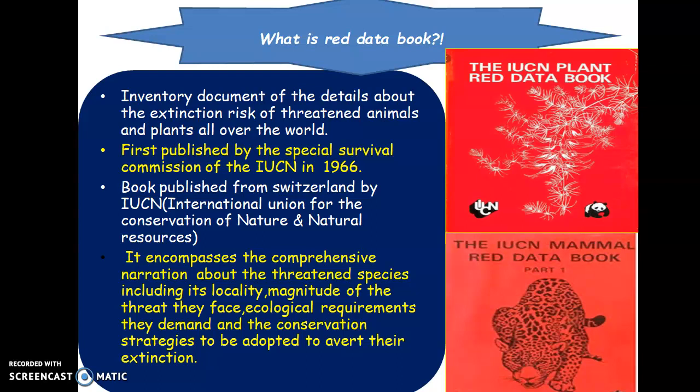What does this Red Data Book include? It encompasses a comprehensive description of threatened species, including their locality, the magnitude of the threat they face, the ecological requirements the concerned species demand, and the conservation strategies that need to be adopted to reduce or avoid their extinction. These are the main details included in the Red Data Book.